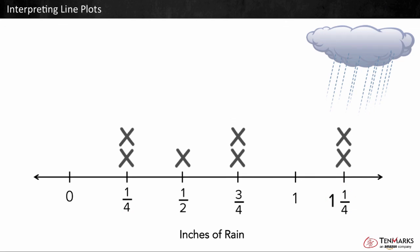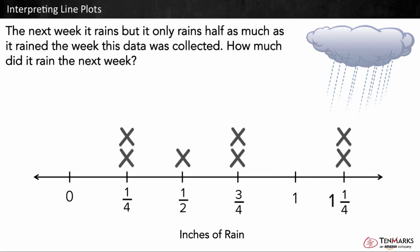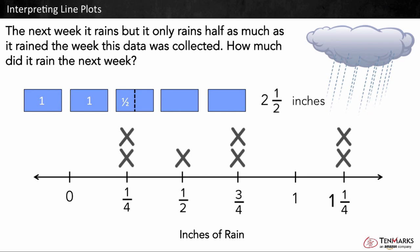Let's look at another question. The next week it rains, but it only rains half as much as it rained the week this data was collected. How much did it rain the next week? We know that it rained a total of five inches from before. We found this out earlier by adding up all the values. If it rains half as much the next week as it did the week before, we can take five and divide it by two or find half. Half of five is two and a half. So, two and a half inches of rain fell the next week.